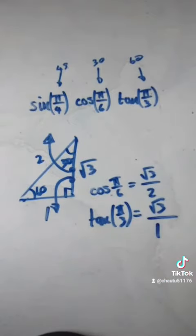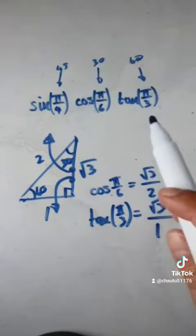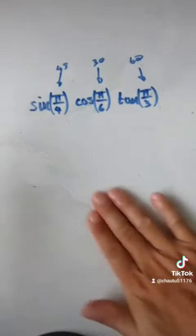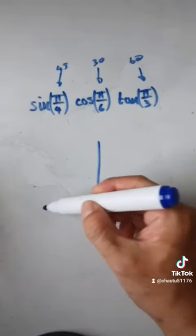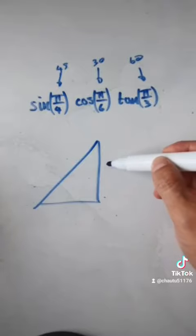And if you want to know 45 degrees, consider this triangle where you have length 1, 1.